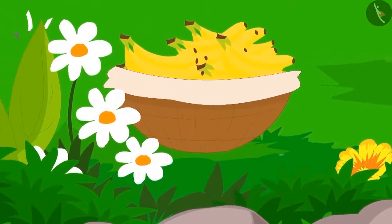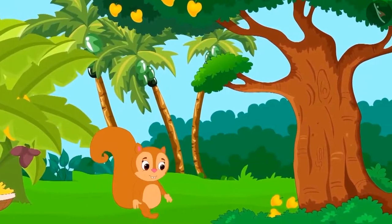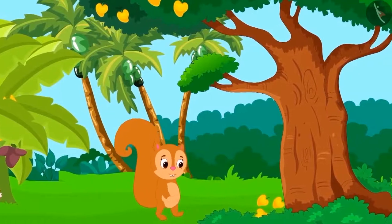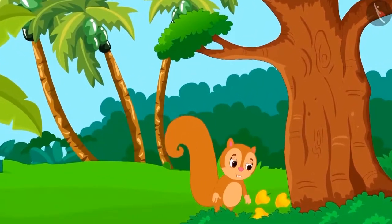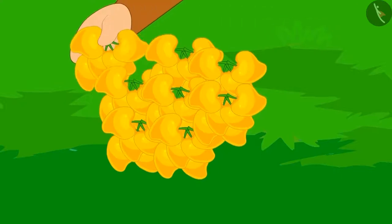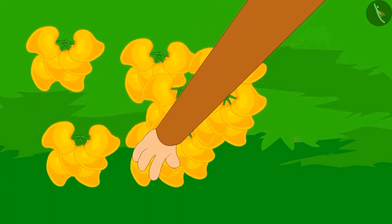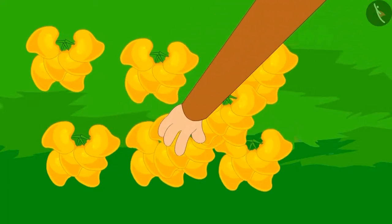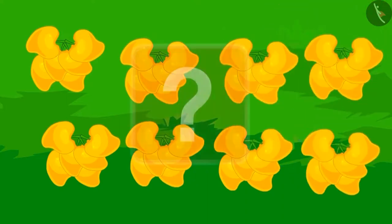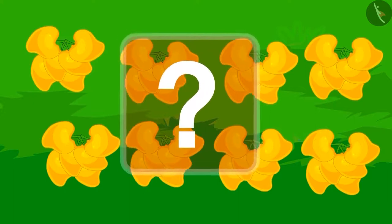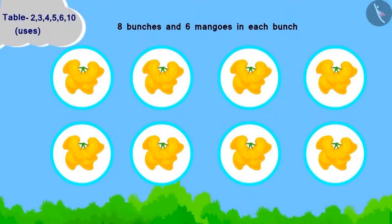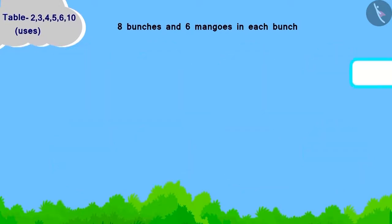Chanda filled twelve bananas in a basket and started walking in her garden. Chanda collected a lot of mangoes from her mango tree and tied them in bunches of six mangoes each. Can you tell how many mangoes has Chanda collected in total? Chanda has got eight bunches and every bunch has six mangoes in it. How will we write this?